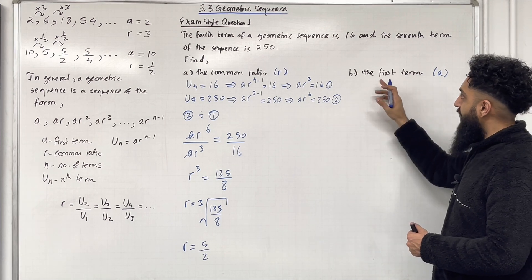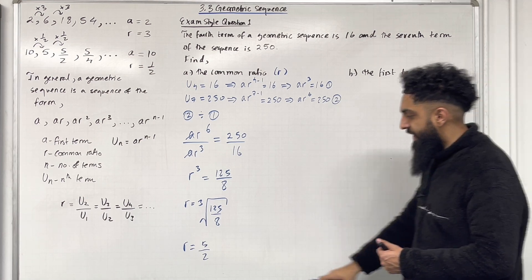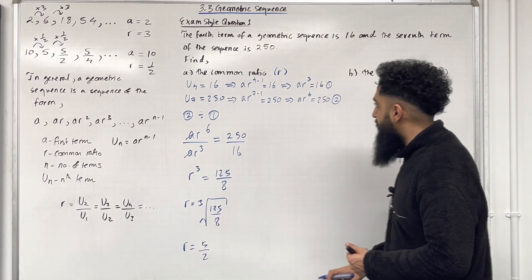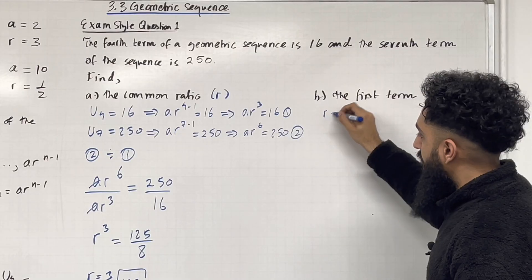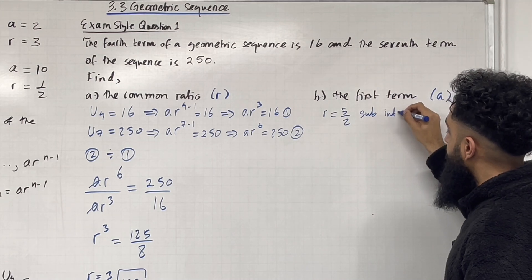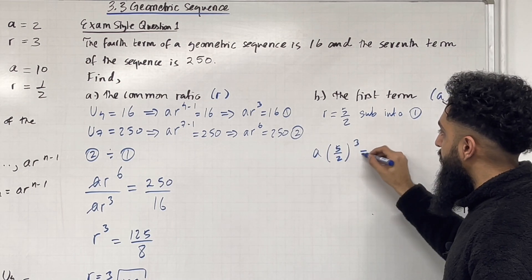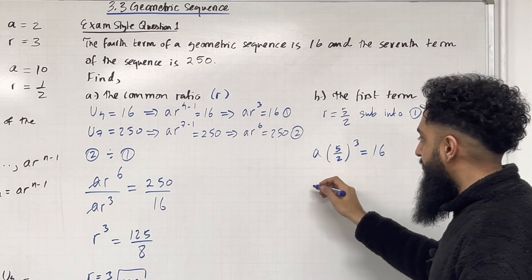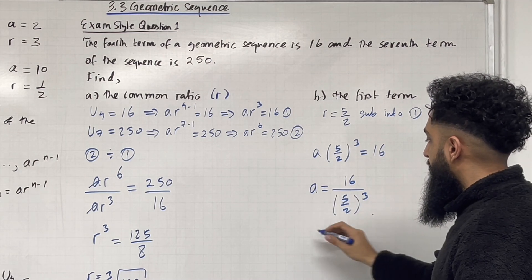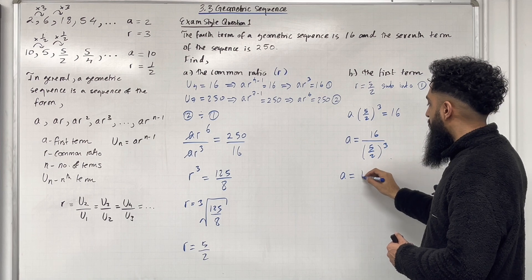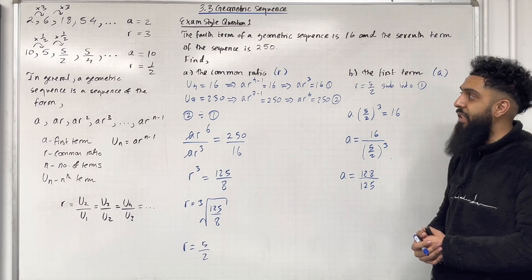Moving on to part B, we want to calculate the first term A. We take R = 5/2 and substitute into equation 1: A(5/2)³ = 16. Making A the subject: A = 16 ÷ (5/2)³. Putting this into the calculator gives A = 128/125. That completes exam style question 1.